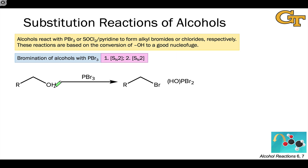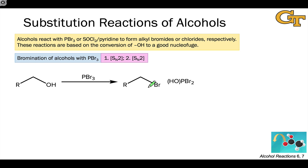Both of these reactions amount to the substitution of the alcohol hydroxyl group for a halogen atom. They use one of two reagents: either PBr3 to install a bromine atom, or SOCl2 and the base pyridine to install a chlorine atom. I want to look at these transformations from a synthetic perspective and examine their mechanisms.